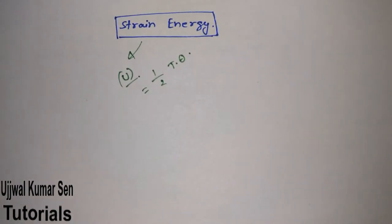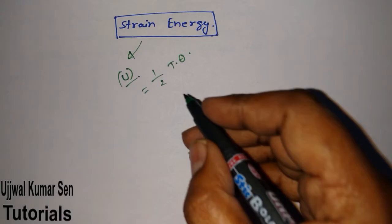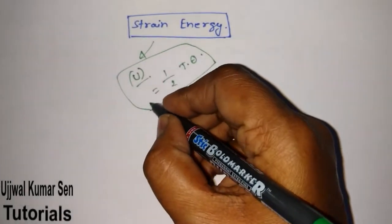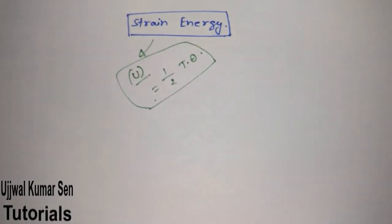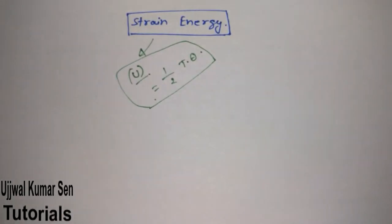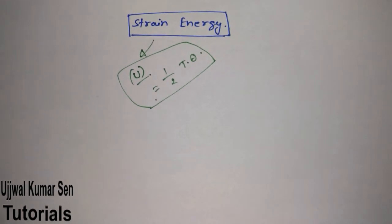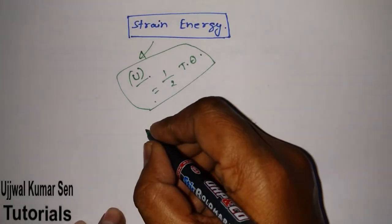However, as the numerical problem asked in GATE 2007 shows, you cannot solve that numerical problem by using this basic formula U = ½Tθ. That is why I want to make you understand its basic concept as well as the formula needed to solve the numerical problem.